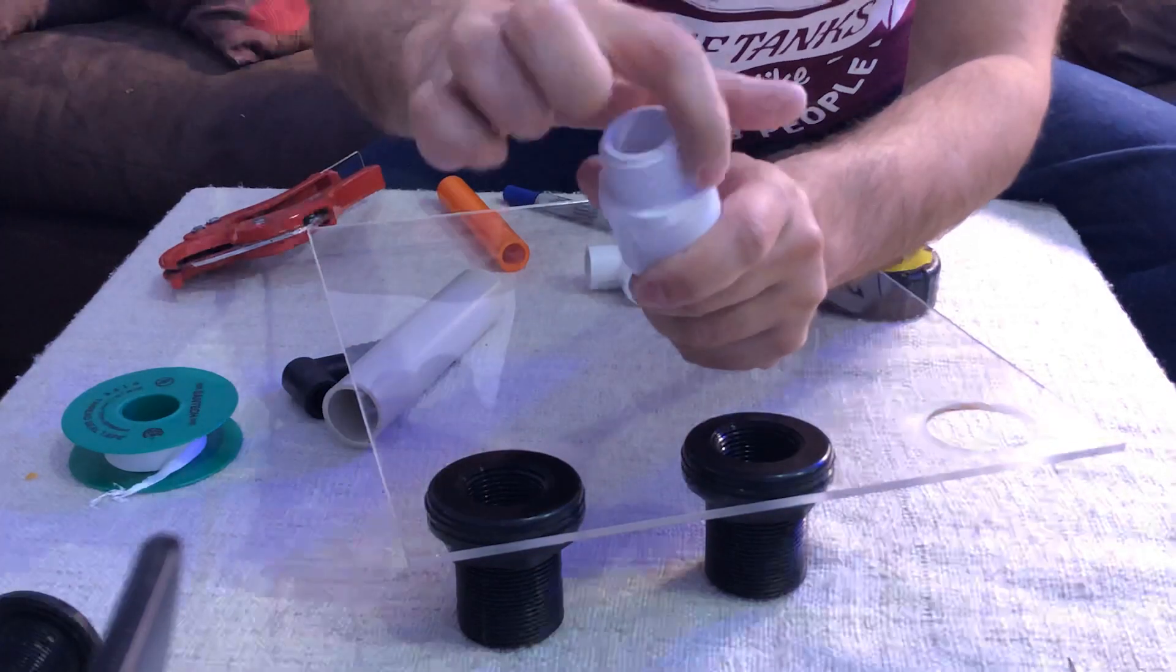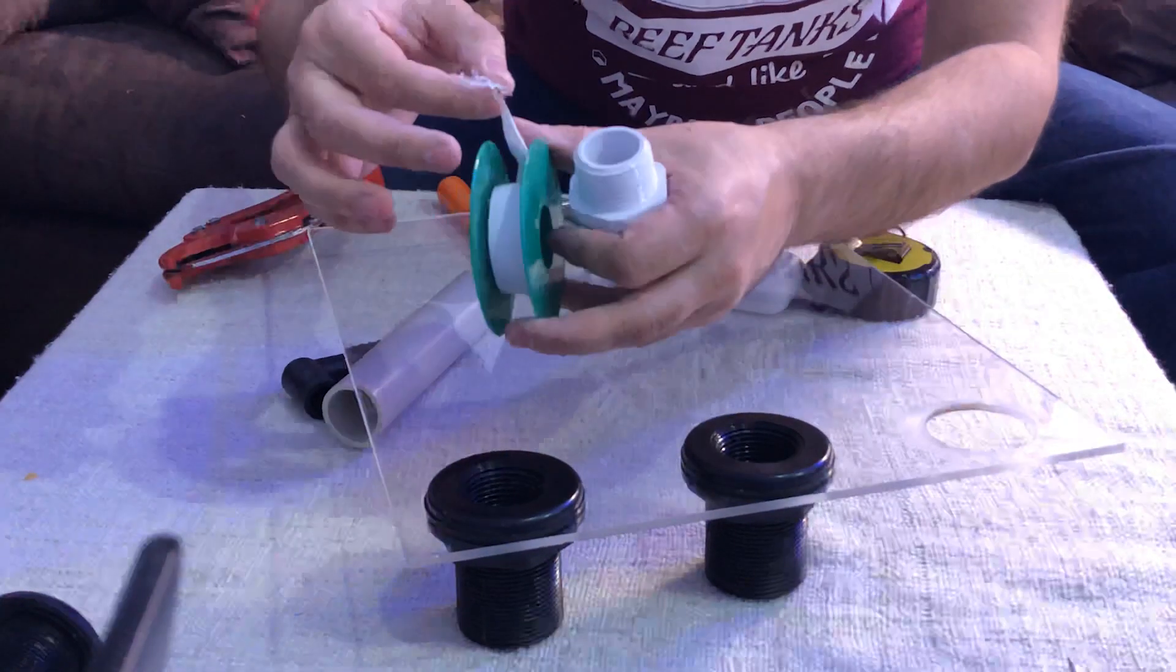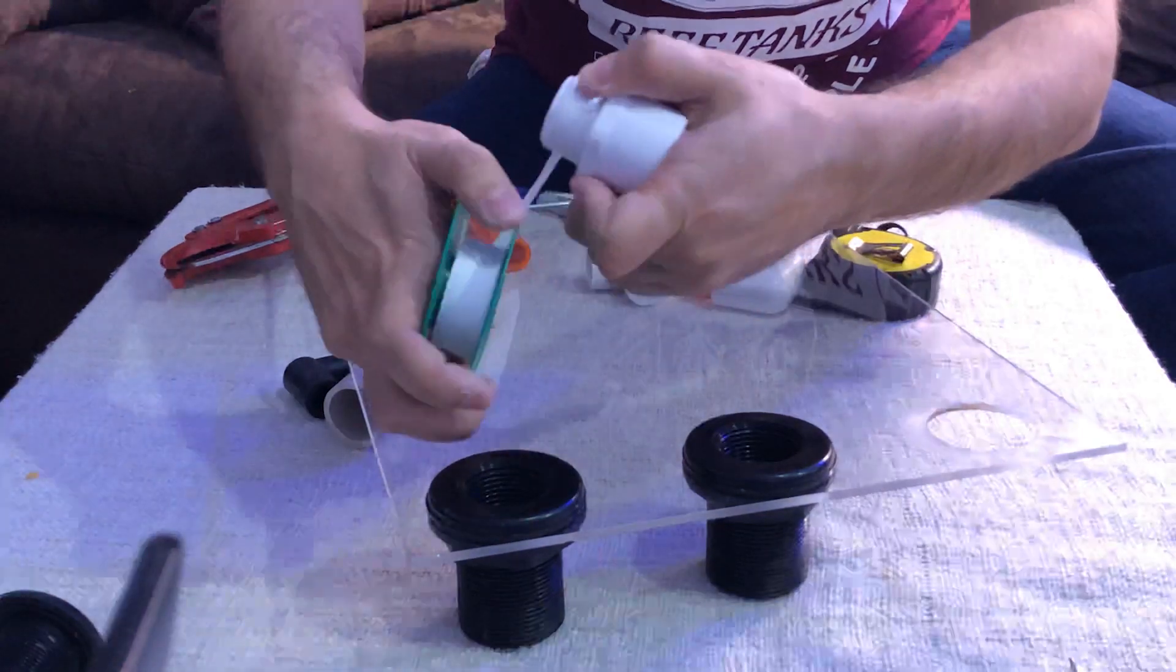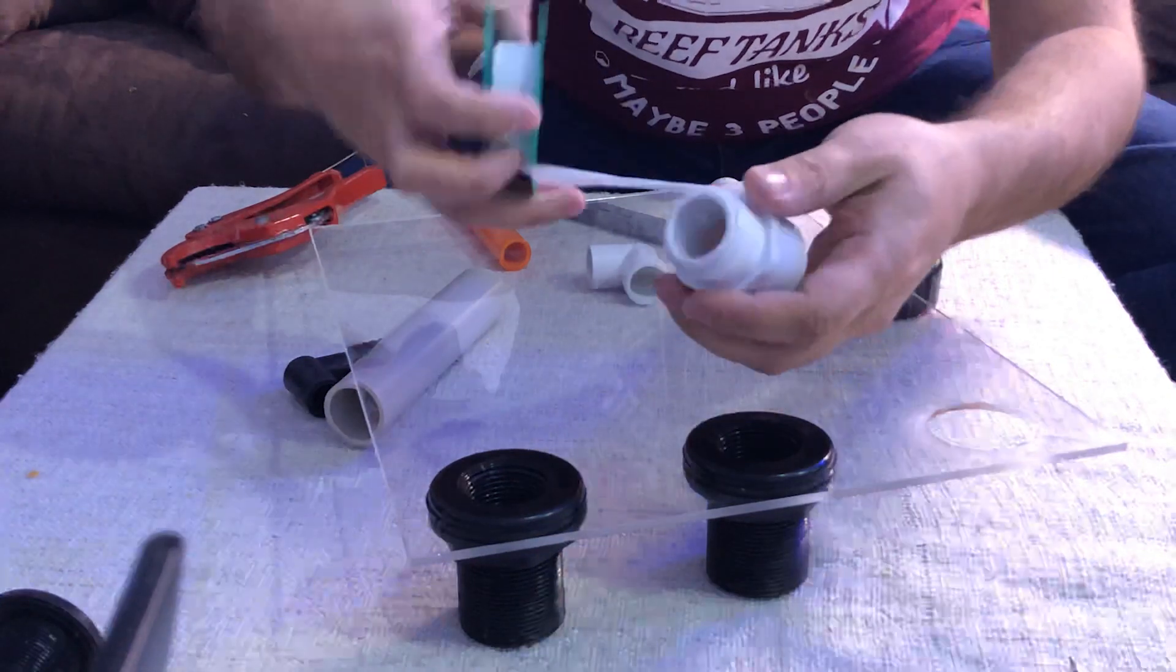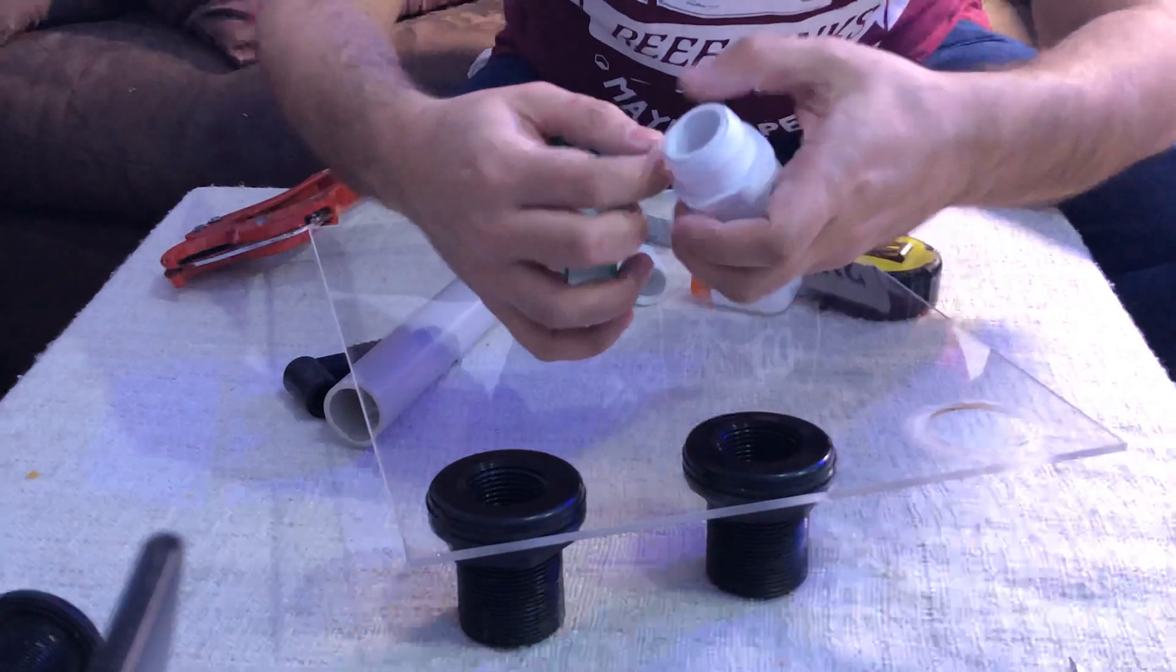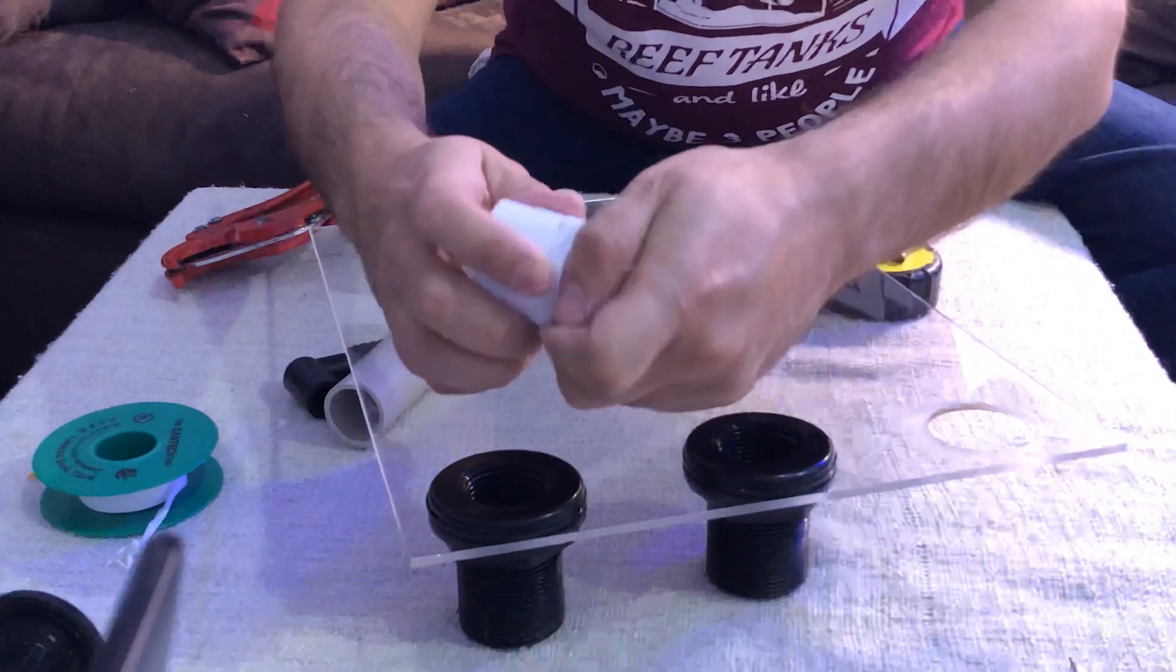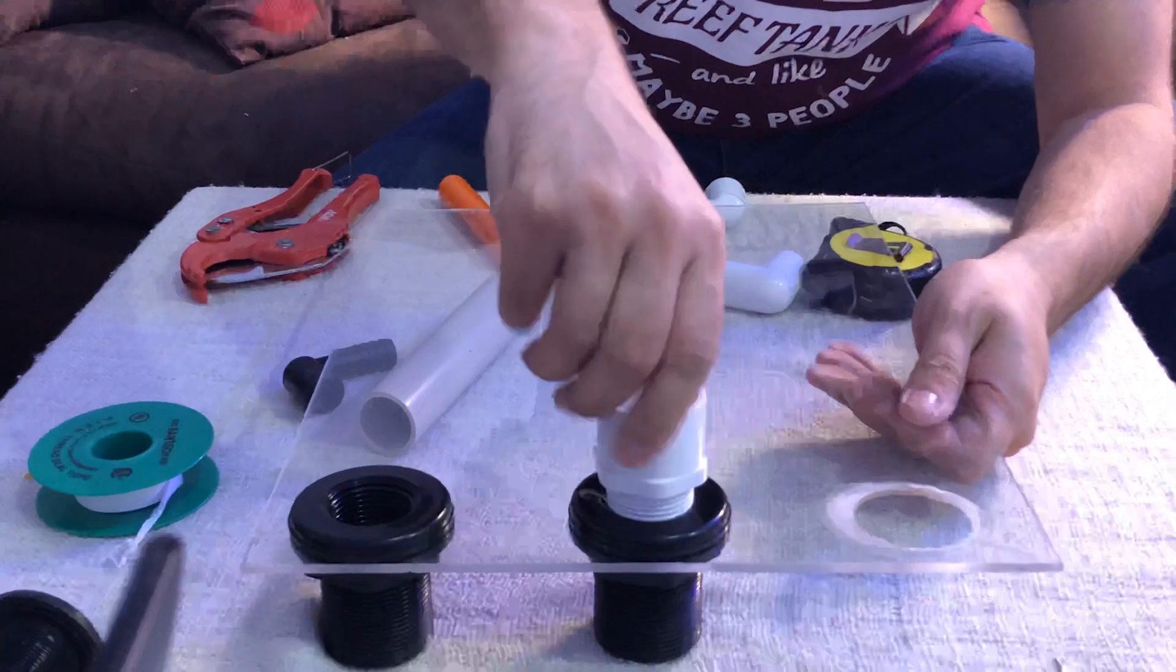For threaded fittings, we can't use glue to make the seal. We use Teflon tape. We wrap a generous amount of Teflon tape, then we screw the fittings inside each other.